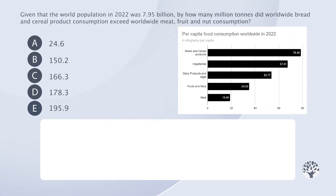We'll start by carefully analysing the question. The question reveals two things – the concept we need to use and the data we need to look at. Given that the world population in 2022 was 7.95 billion, by how many million tonnes did worldwide bread and cereal product consumption exceed worldwide meat, fruit and nut consumption? So we need to find the total consumption of bread, cereals, meat, fruits and nuts.